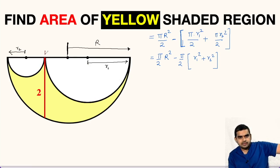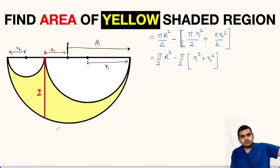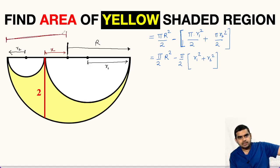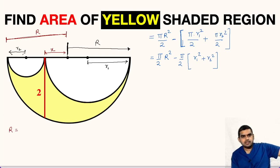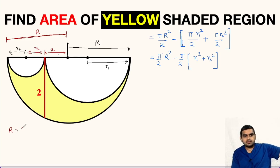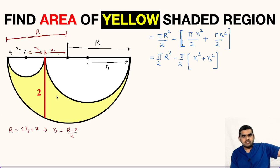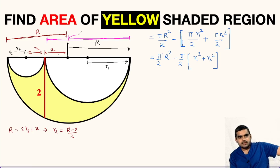Now let us assume that this distance is x. Focusing on the length equal to capital R, we can see that capital R equals r2 plus r2 plus x, that is 2r2 plus x. From here, we can write r2 equals (capital R minus x) divided by 2.